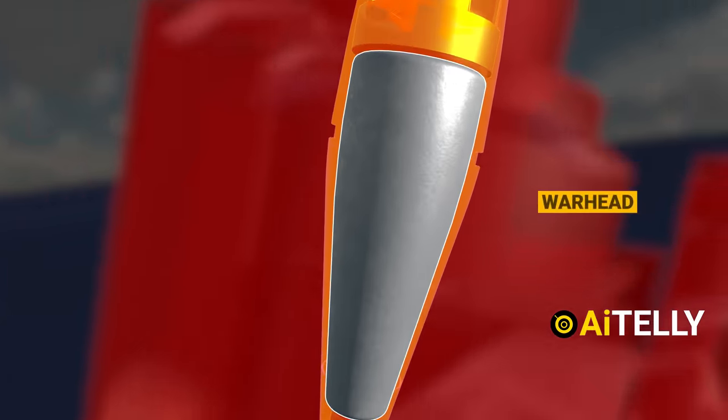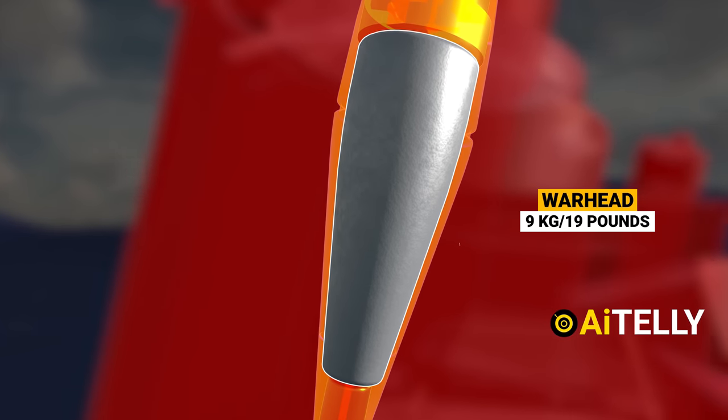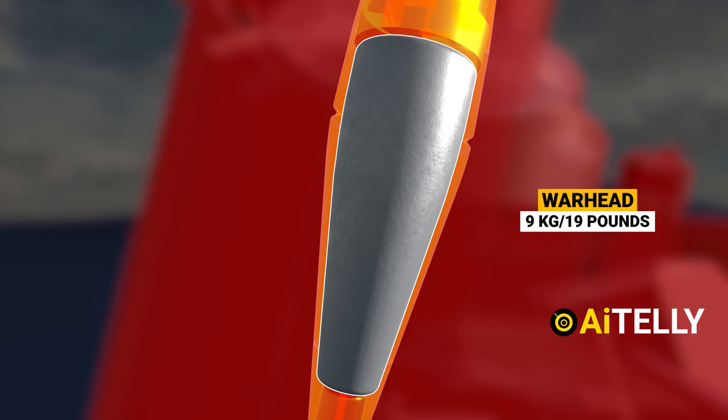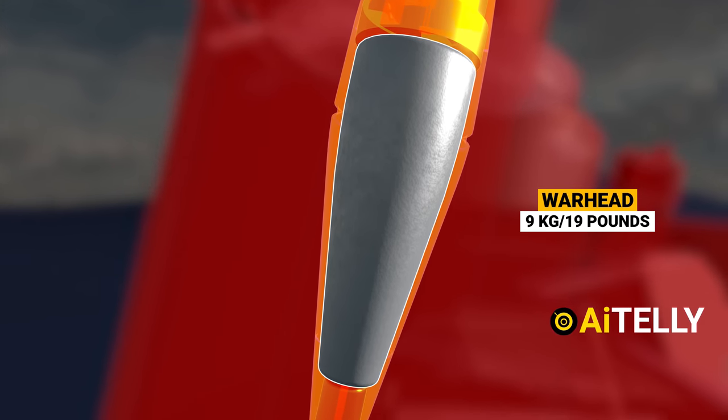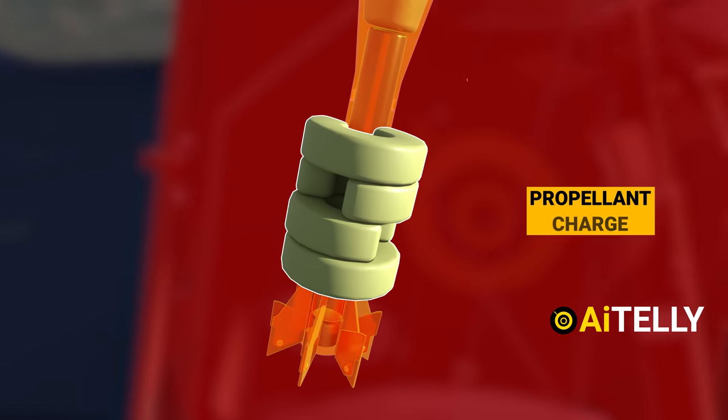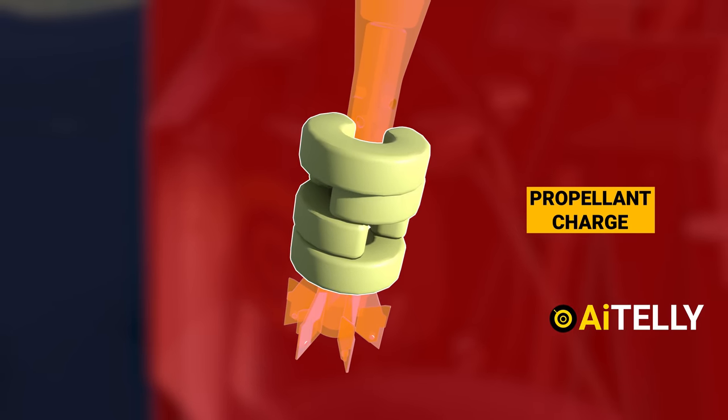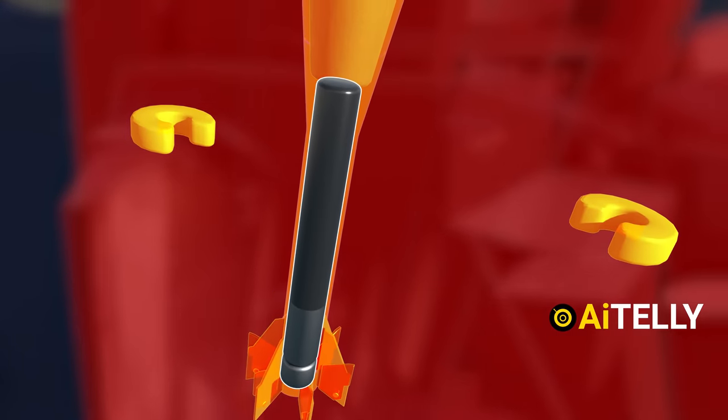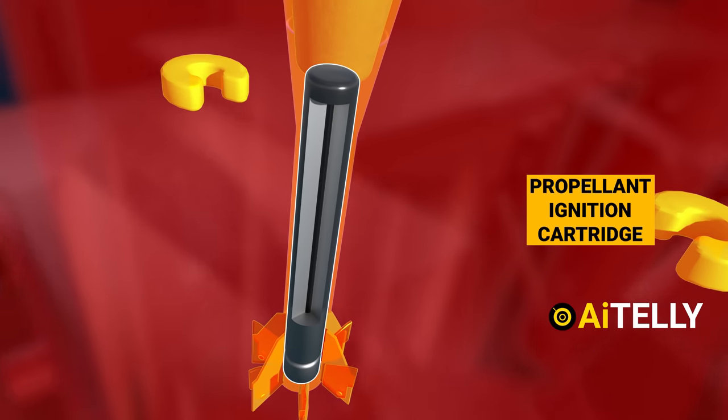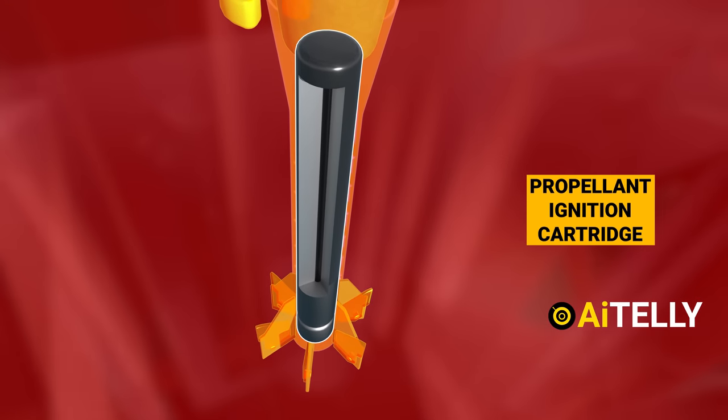Just behind it is the warhead, which weighs approximately 9.0 kilograms, equivalent to around 19 pounds. Now these peculiar-looking rings are the propellant charge increments that can be applied as instructed by the commander. The thin strip extending to the base is the propellant ignition cartridge essential for the charge increments to function.